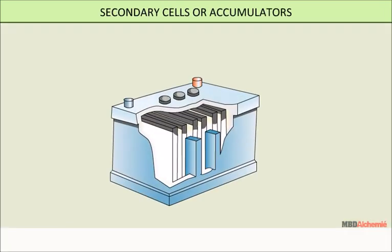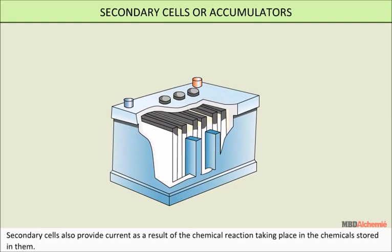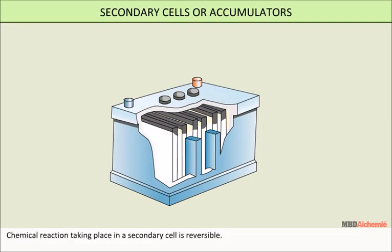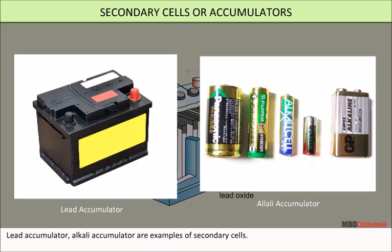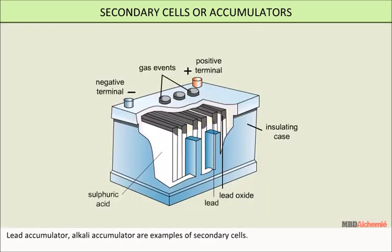Secondary cells or accumulators also provide current as a result of chemical reaction taking place in the chemicals stored in them. The chemical reaction taking place in a secondary cell is reversible, so it can be recharged and hence it is better than the primary cell. Lead accumulator and alkali accumulator are examples of secondary cells. The parts of secondary cells include lead oxide, insulating case, gas vents, sulphuric acid, and two terminals — positive and negative.